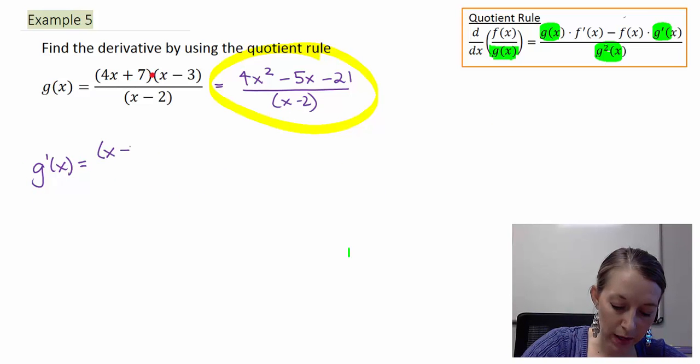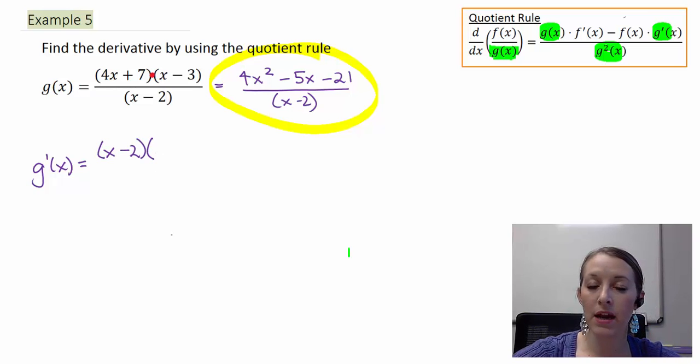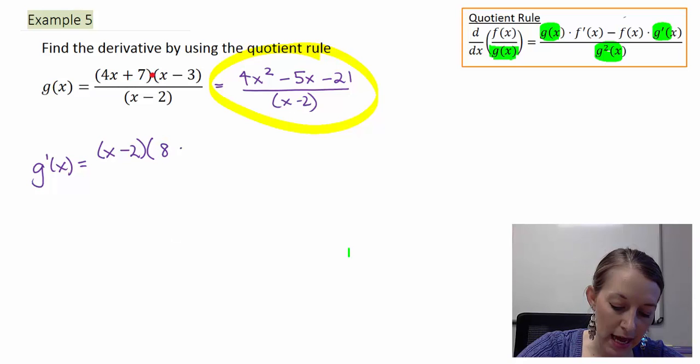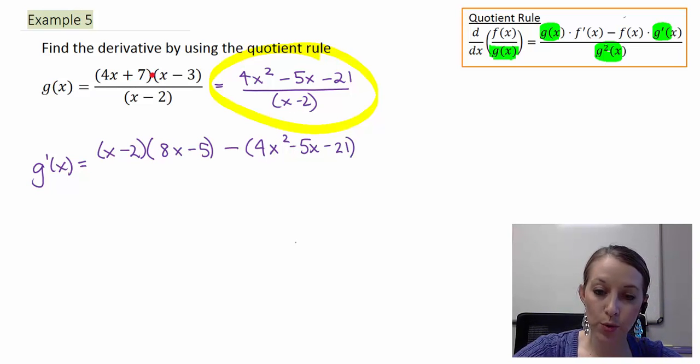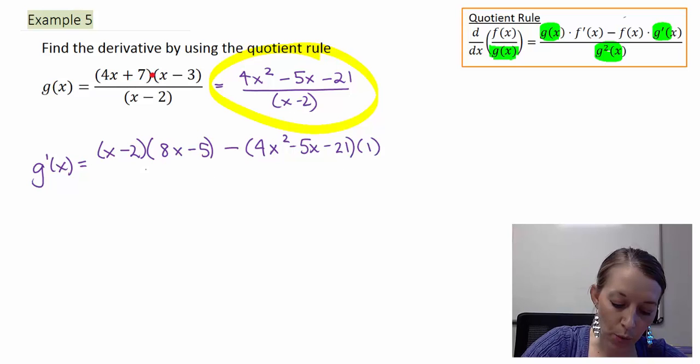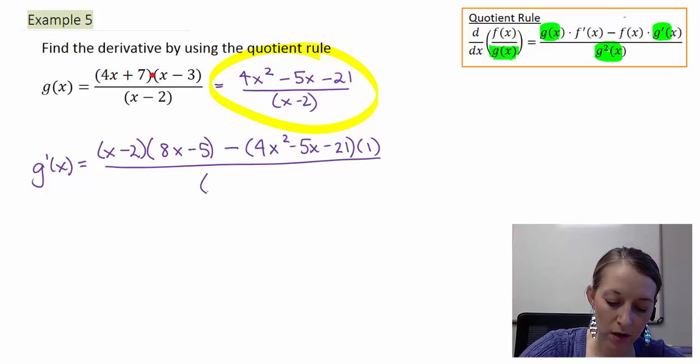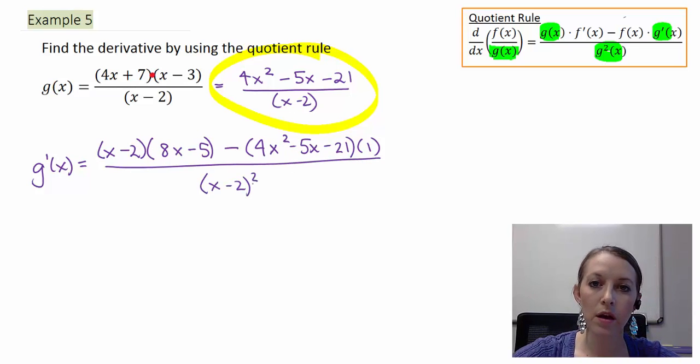So now, the original of the bottom, x minus 2, times the derivative of the top, and I'm not even going to write it out, I'm just going to do it. That gives me 8x minus 5, minus the original of the top, 4x squared minus 5x minus 21, times the derivative of the bottom, which is just 1, all over my bottom squared.